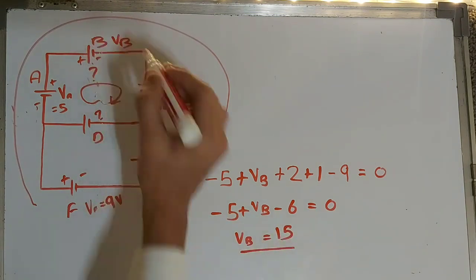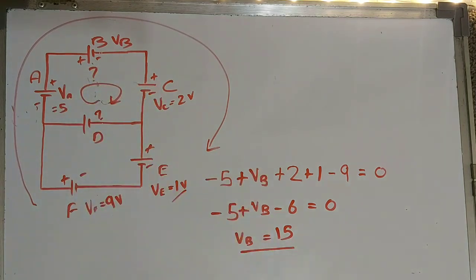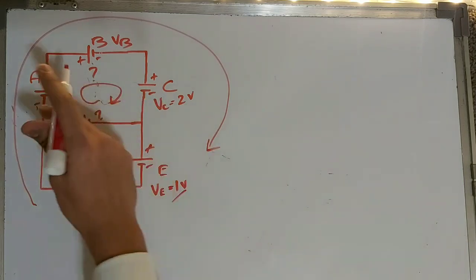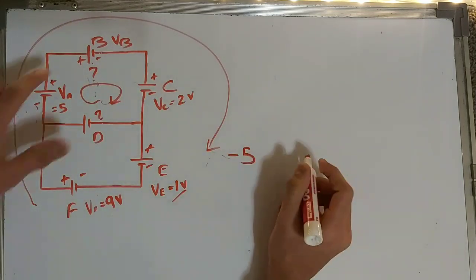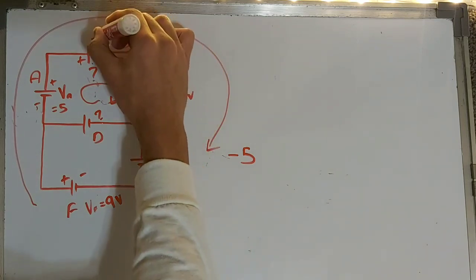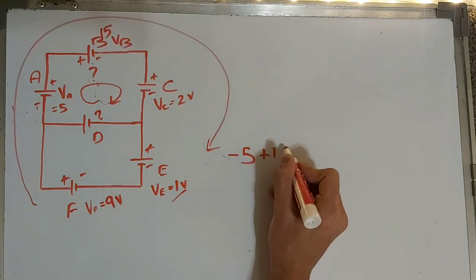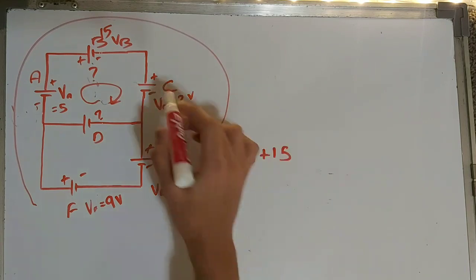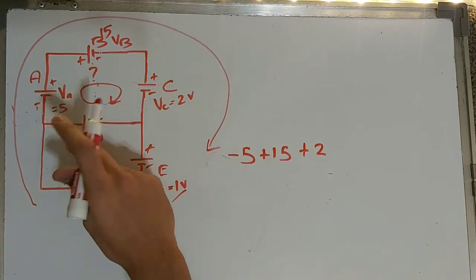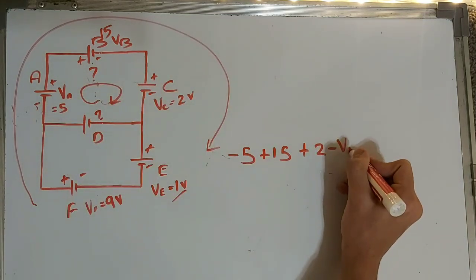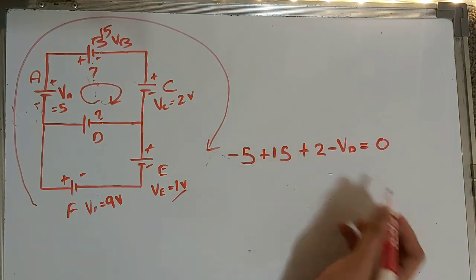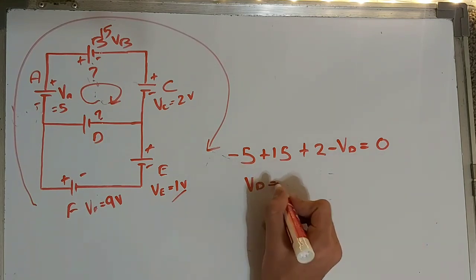Now we have VB equals 15. Let's calculate VD using the inner loop, starting from A again. Minus five from A — going from negative to positive — then plus VB which is 15, going from positive to negative. Plus two for C going from positive to negative. Minus VD going from negative to positive. Equal to zero. So minus five plus 15 plus two minus VD equals zero, giving VD equals 12.